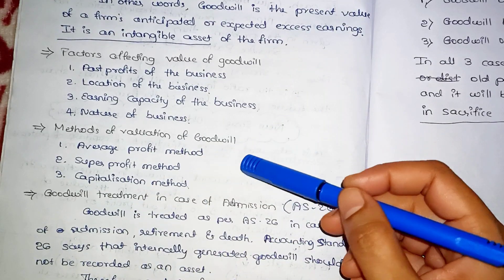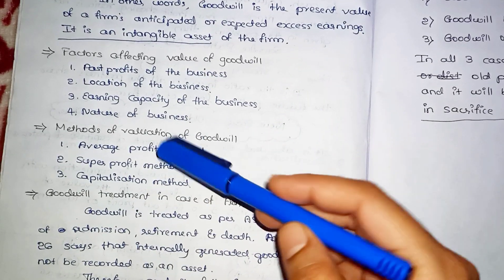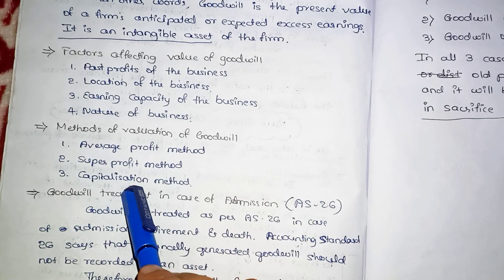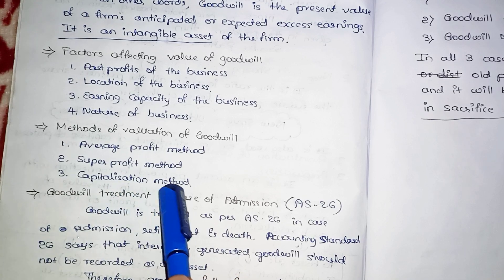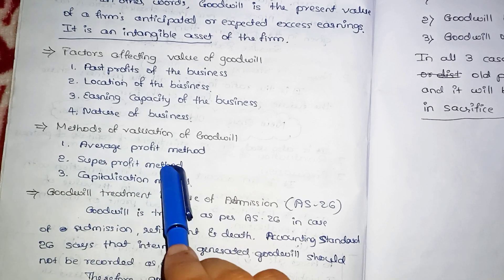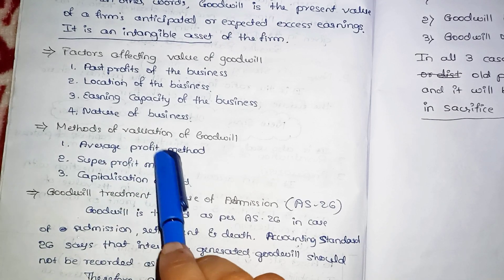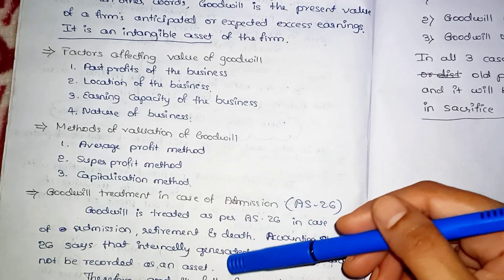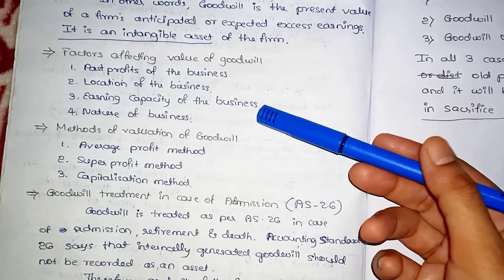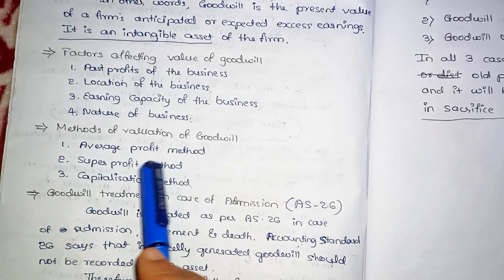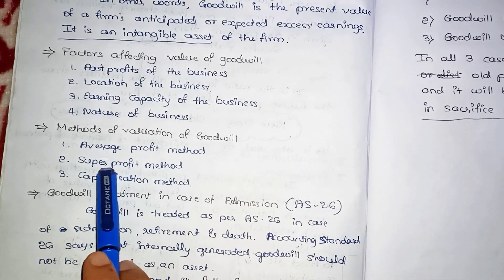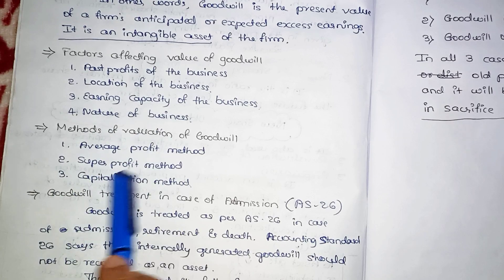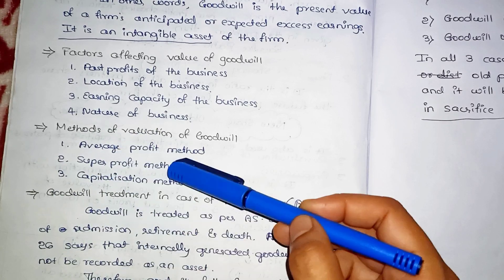There are three methods of valuation of goodwill: one is the Average Profit Method, one is the Super Profit Method, and one is the Capitalization Method. Super profit means excess profit - the profit earned above normal profit. These methods are important for one and two-mark questions.